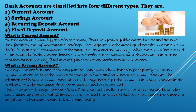The rate of interest on savings accounts ranges between 4 to 6% in India, but due to the lockdown it has gone down to around 3%. There is no restriction on the number and amount of deposits, but withdrawals are subject to certain restrictions. Some banks require you to maintain a minimum balance — government banks require around 1,000 rupees and private banks typically more than 5,000 rupees.